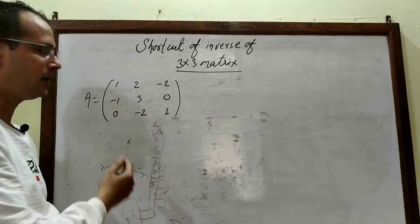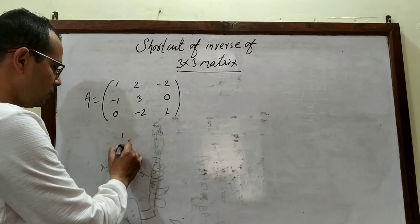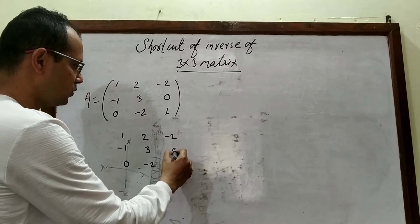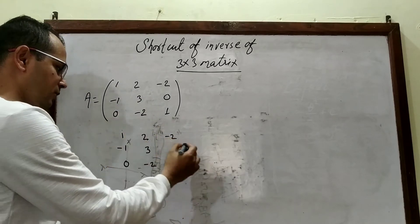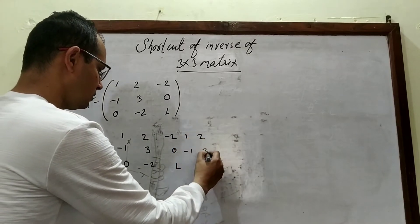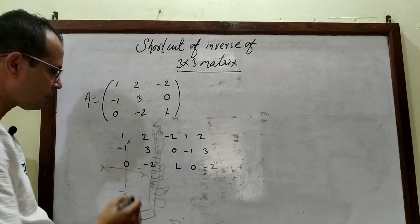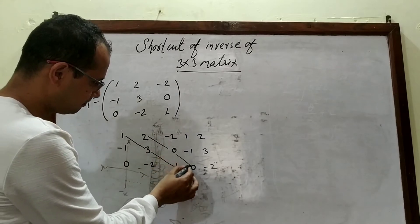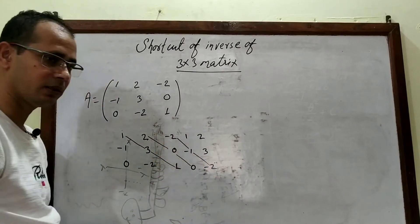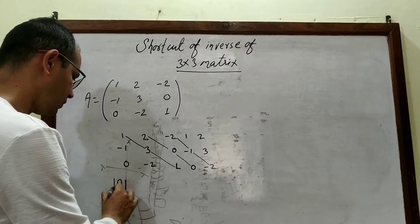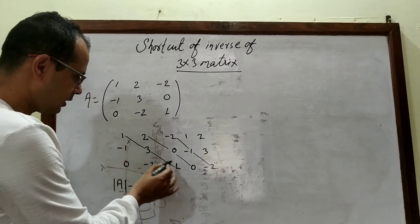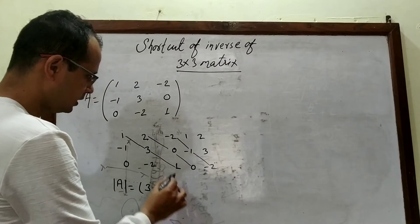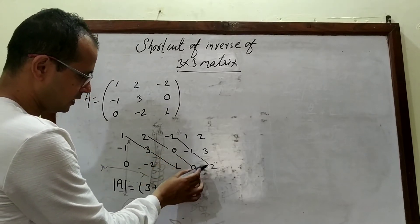First of all we need to calculate its determinant, and we can apply the rule of Sarrus. The matrix is 1 -1 0 / 2 3 -2 / -2 0 1. We rewrite the first two columns alongside, then multiply in a diagonal pattern. We get: 1×3×1 = 3, plus 2×0×0 = 0, plus -2×(-1)×(-2) = -4.